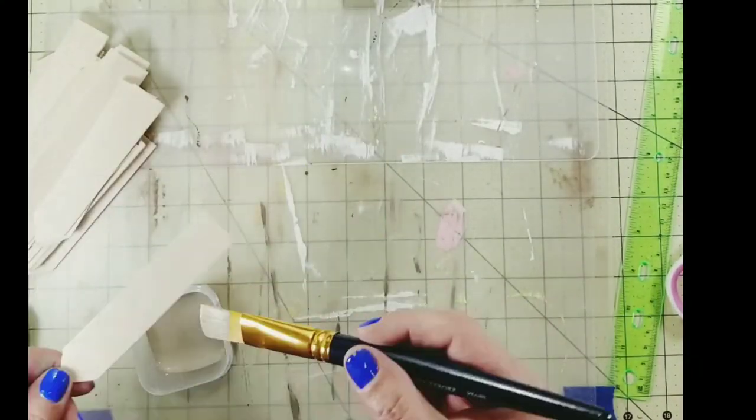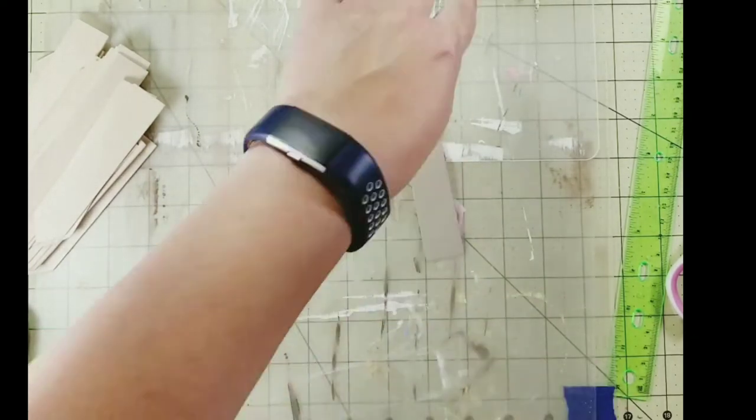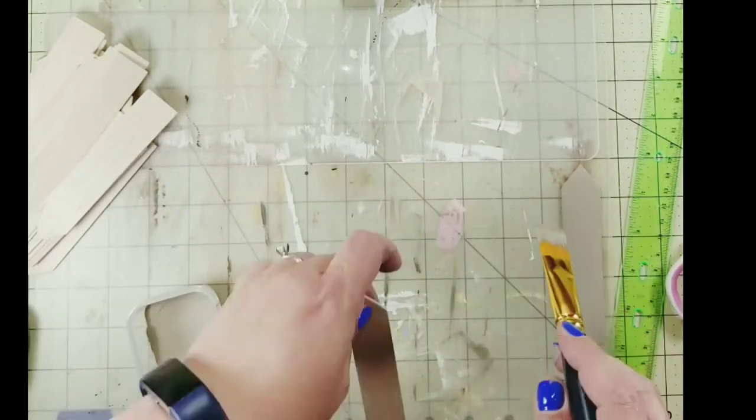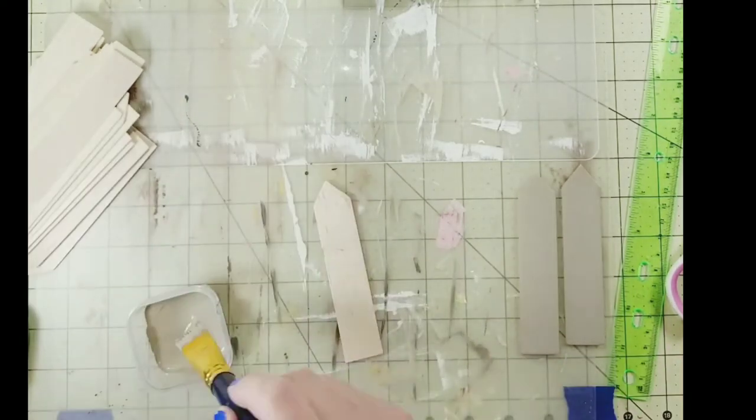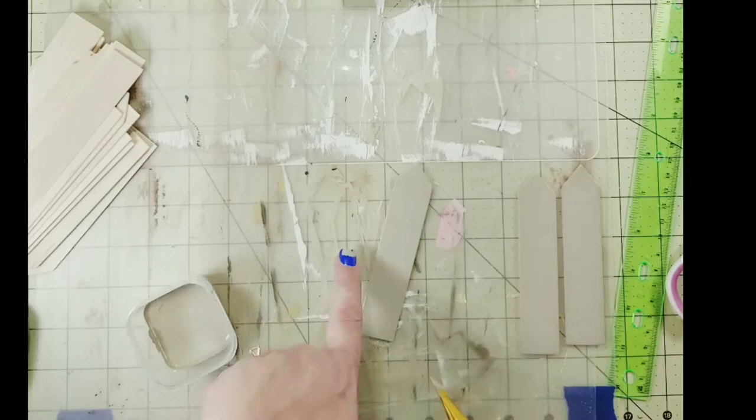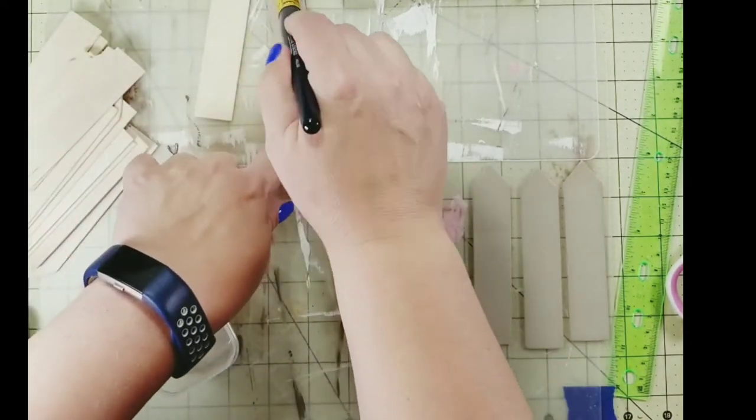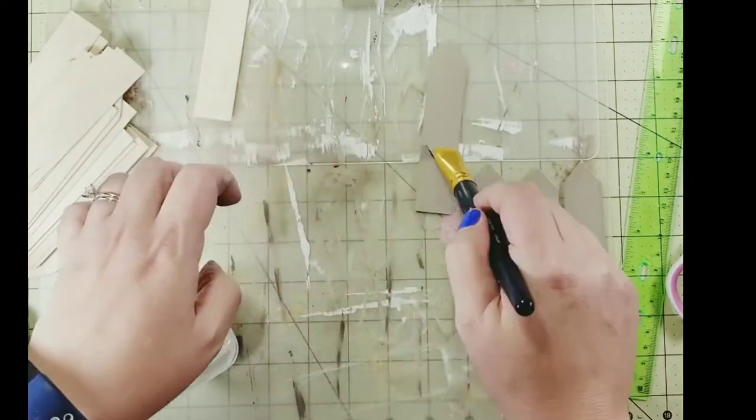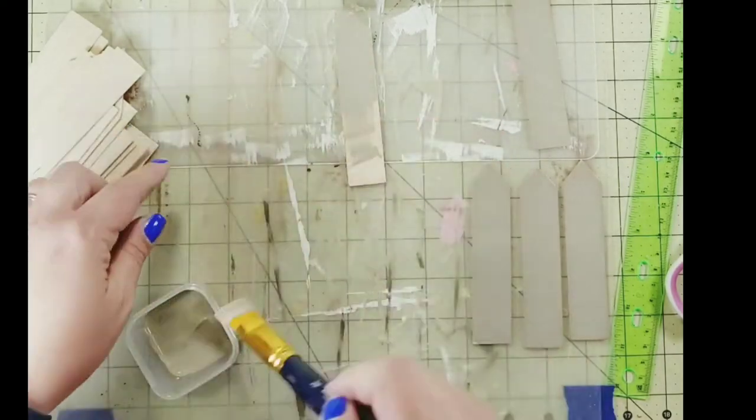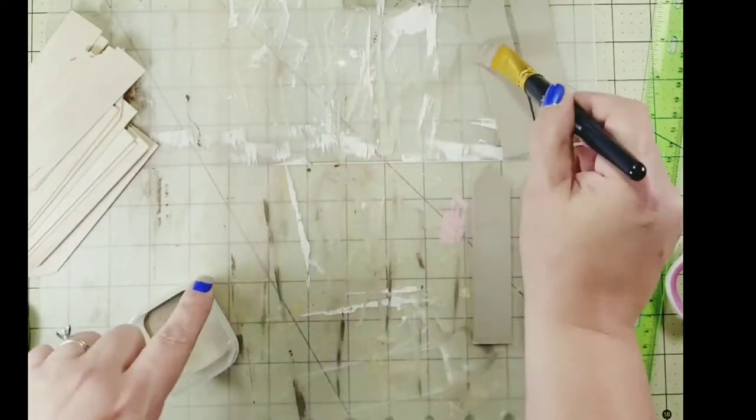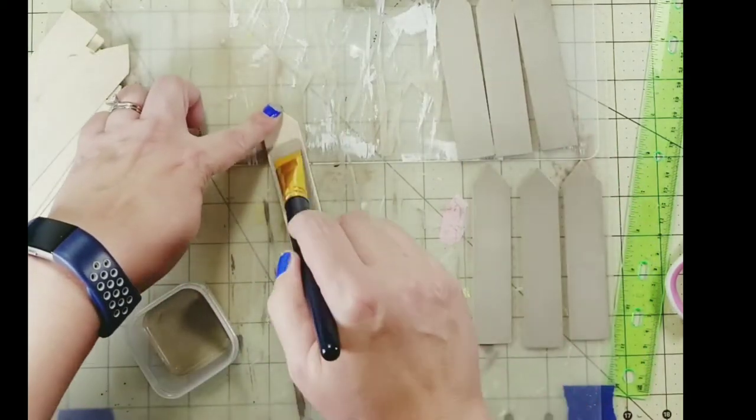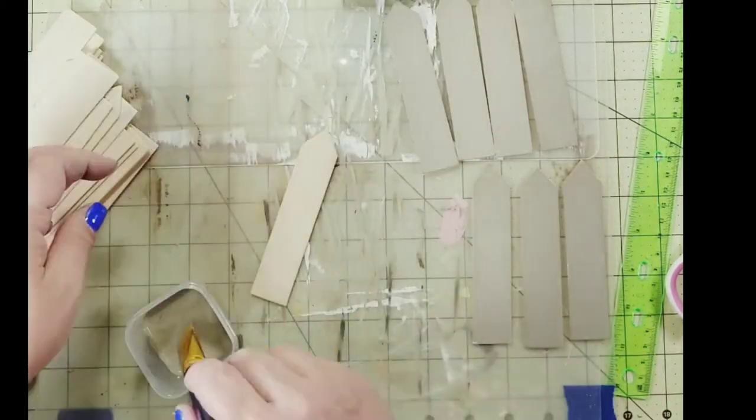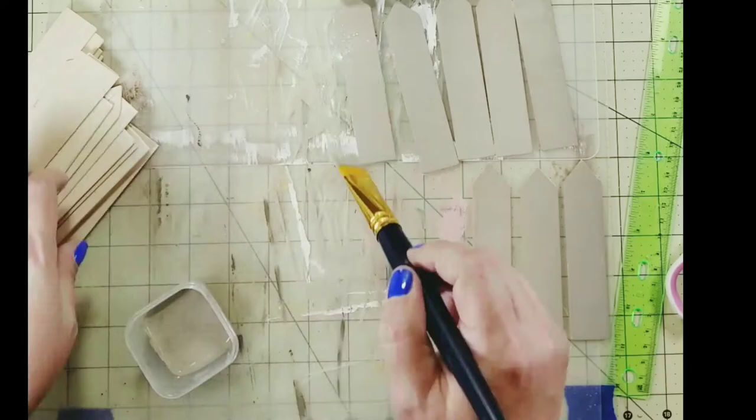Once you get that all painted you're going to paint your jumbo craft sticks. I painted both sides of all the sticks and then added a second coat of paint to one side of each of those sticks. The other side will be faced on the inside towards your flowers so you won't be able to tell if you only have one coat of paint on it. But if you want to add an extra coat of paint to both sides, hey I say go for it. Do what you like to do.